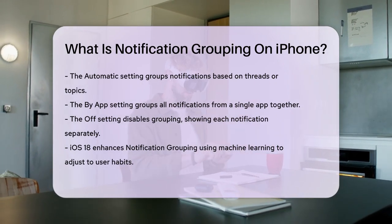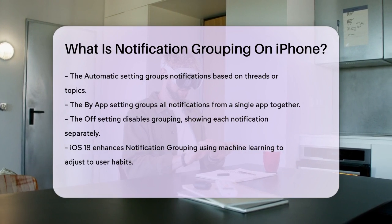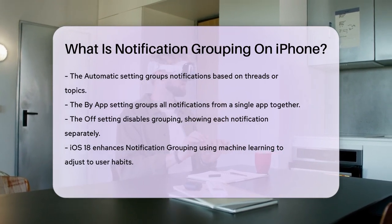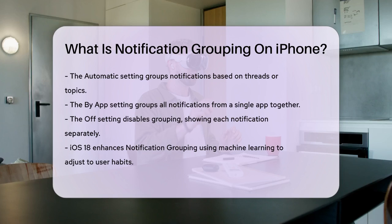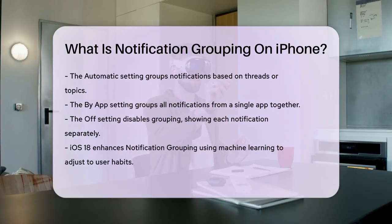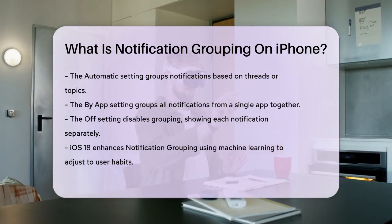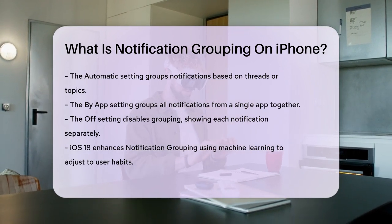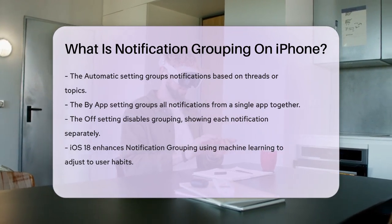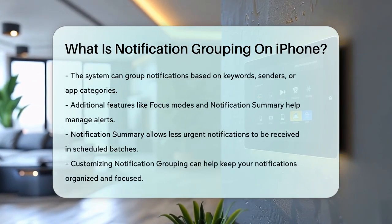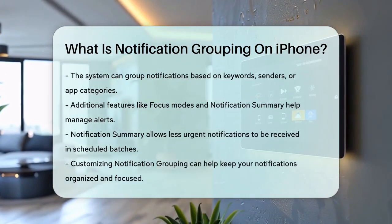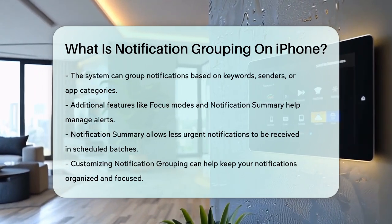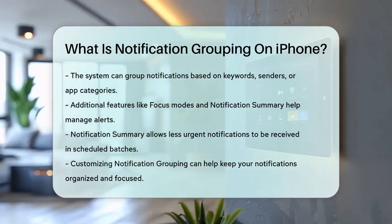For instance, if you prefer to see all your email notifications together but want your social media notifications to be more granular, you can adjust these settings on a per-app basis. In iOS 18, Apple has further refined this feature with the help of machine learning. The system now learns your habits and adjusts notification delivery accordingly. It can also group notifications based on keywords, senders, or app categories, making it easier to manage your day without the noise of constant alerts.